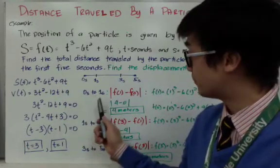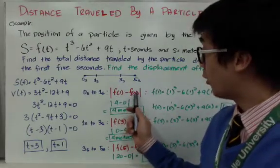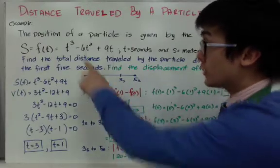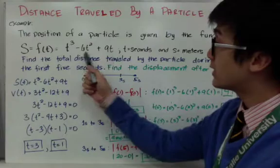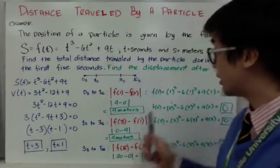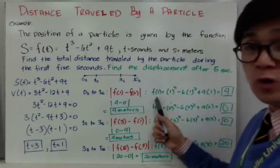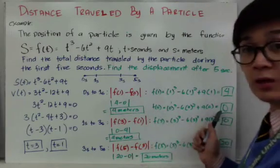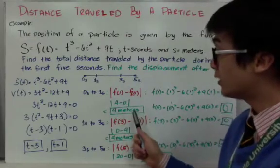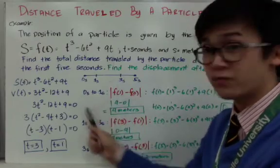To find the distance for each interval, take the absolute value of f(terminal) minus f(initial) using the original position function t cubed minus 6t squared plus 9t. For the first interval: f(1) equals 4 and f(0) equals 0, so the absolute value of 4 minus 0 is 4 meters. The particle moved 4 meters from zero to one second.